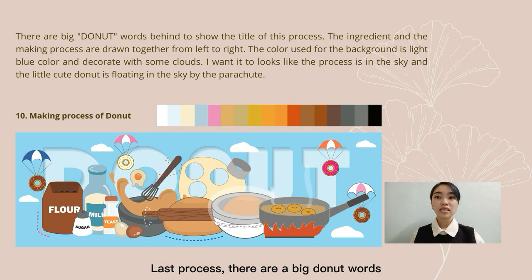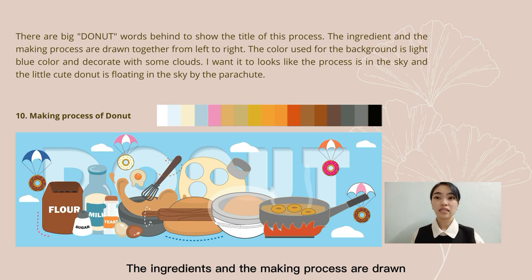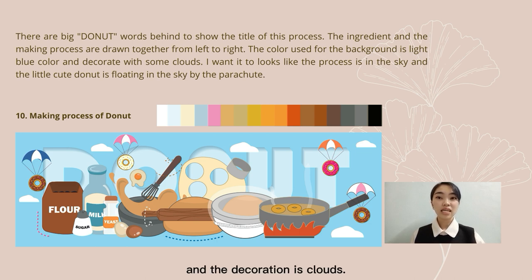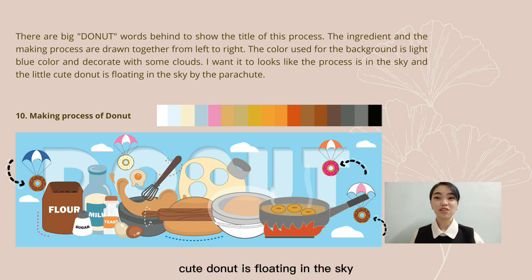Last process — baked doughnut. The words 'baked doughnut' are placed behind to show the title of this process. The ingredients and the making process are drawn together from left to right. The colour used for the background is light blue, and the decoration is clouds. I wanted it to look like the process is happening in the sky, with the little character floating in the sky by a parachute.